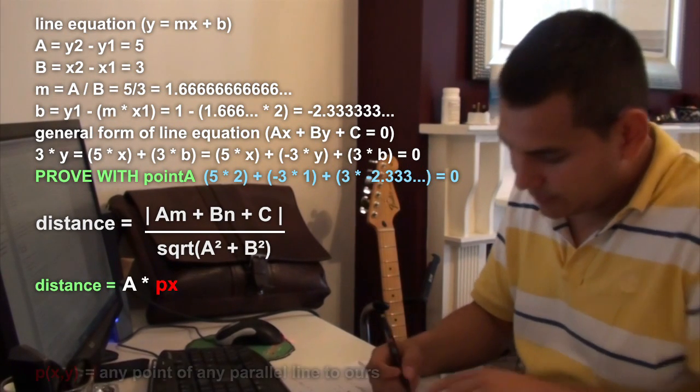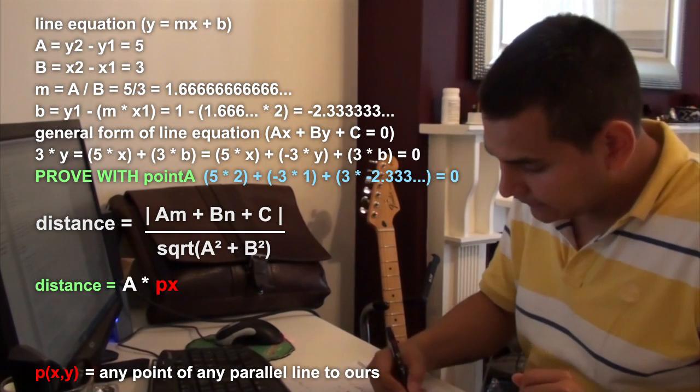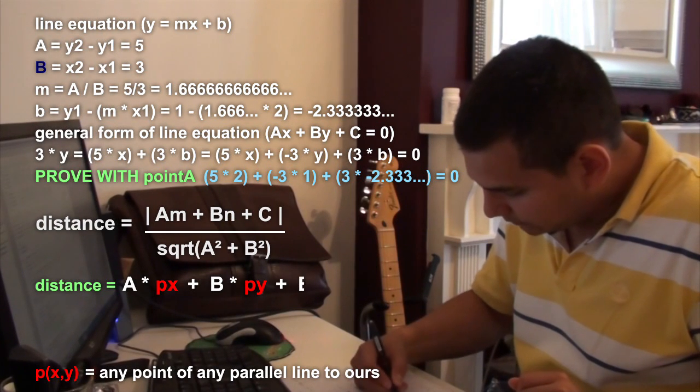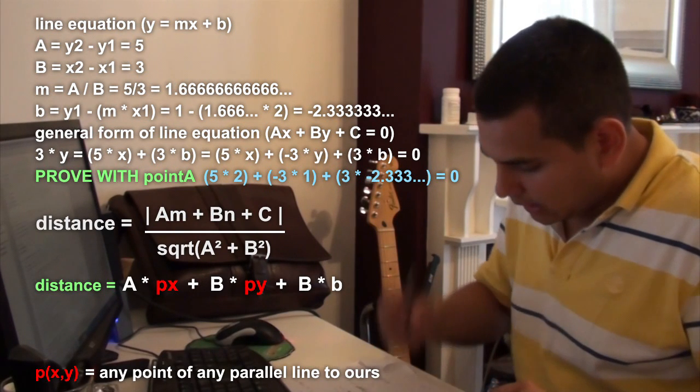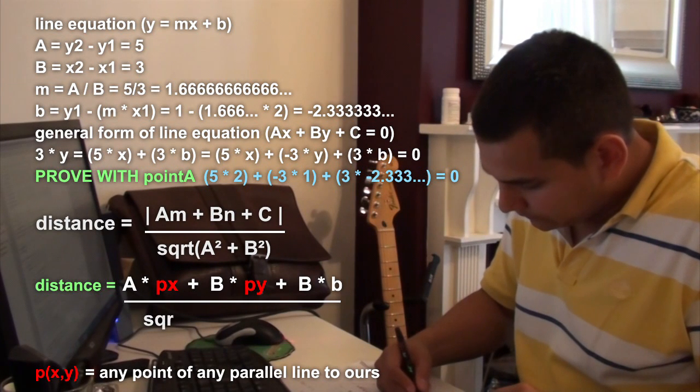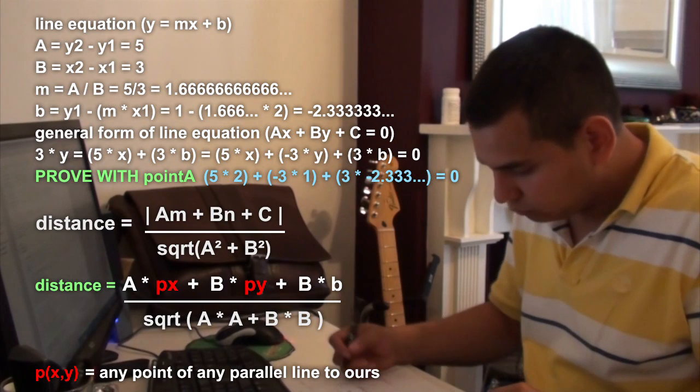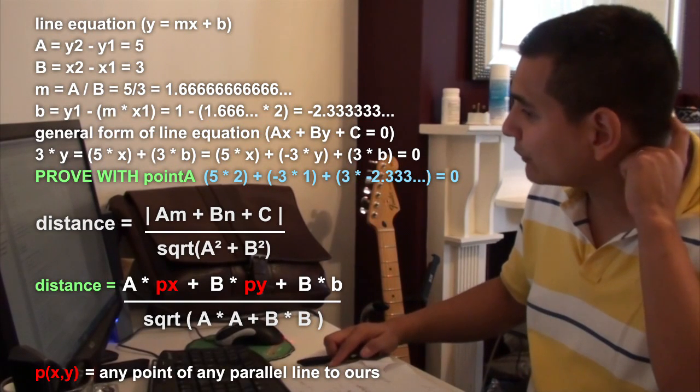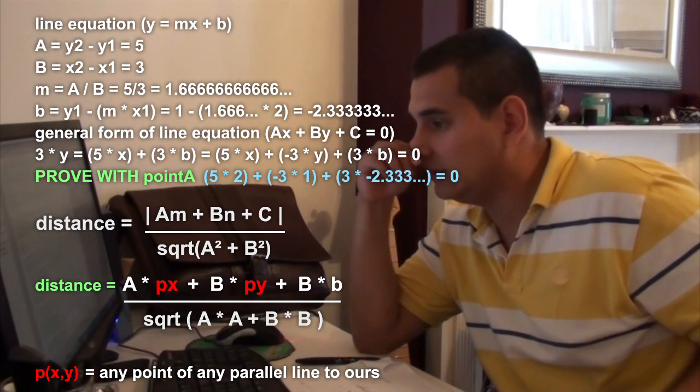That is A times PX, PX means the X position of the point of the parallel line, plus B times PY plus B capital. This B is from the line equation. And all this thing divide, square root of A times A plus B times B. So that's all. That is the whole thing. It's not complex, but it's a bit difficult at the beginning, when you have to find out all these variables and these things.